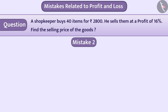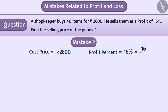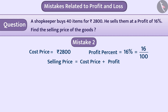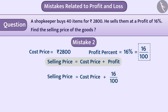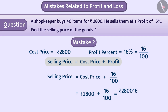Mistake 2: Given cost price = ₹2800 and profit percentage = 16% = 16/100. The cost price and profit are used to find the selling price. Some children add the percentage profit directly to the cost price, getting: selling price = cost price + profit% = 2800 + 16/100 = ₹2,80,016/100, which is wrong.